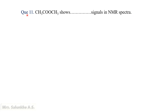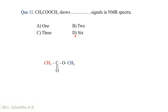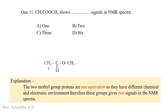Question 11: CH3COOCH3 shows how many signals in NMR spectra? Options: 1, 2, 3, or 6. In methyl acetate (CH3COOCH3), there are two methyl groups, but they are not equivalent as they have different chemical and electronic environments — one is attached to the carbonyl group and the other to the oxygen atom. Therefore, this compound gives 2 signals in NMR spectra. The correct answer is 2.